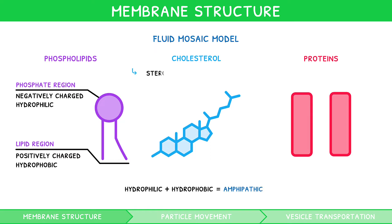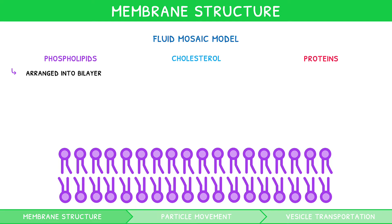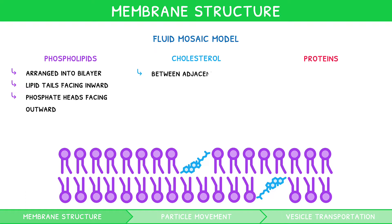Cholesterol is a steroid and, like phospholipids, is also amphipathic. The phospholipids are arranged into a bilayer with the hydrophobic lipid tails facing inwards and the hydrophilic phosphate heads facing outwards. Cholesterol is found between adjacent phospholipids, and it reduces both membrane fluidity and the permeability to hydrophilic particles.